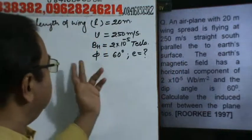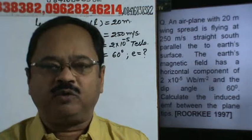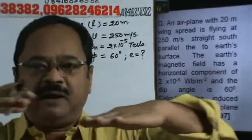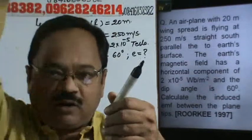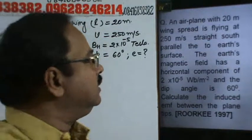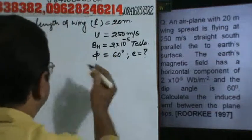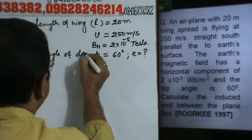We need to have the horizontal component of the earth's magnetic field and the vertical component of the earth's magnetic field. Because if you fly in a horizontal plane, then the earth's vertical component will cut. So, the angle of dip...